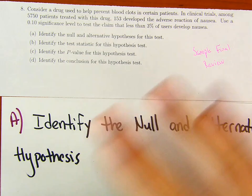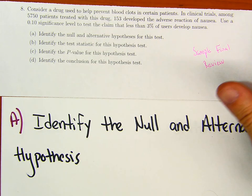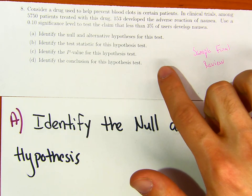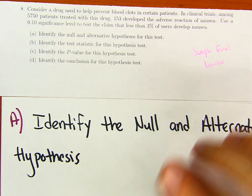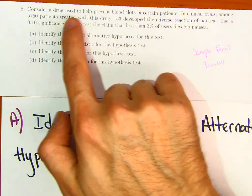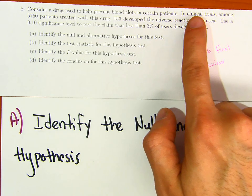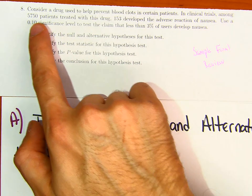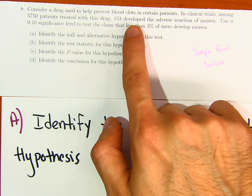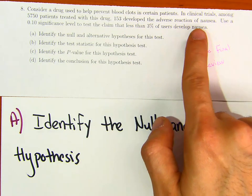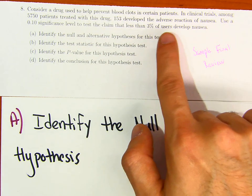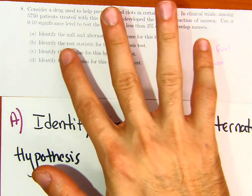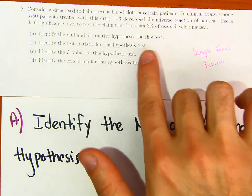Welcome everybody. Let's do question 8 — hypothesis testing — for your sample final review for statistics. This was one of the questions from the sample final review, but we'll practice two more after we're done with this one. For the first question, it says: consider a drug used to help prevent blood clots in certain patients. In clinical trials, among 5,750 patients treated with the drug, 153 developed the adverse reaction of nausea. Use a 0.10 significance level to test the claim that less than 3% of users develop nausea. The first part: identify the null and alternative hypothesis.